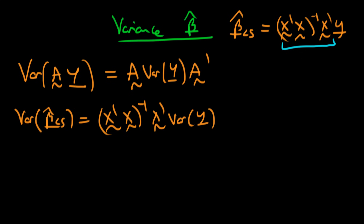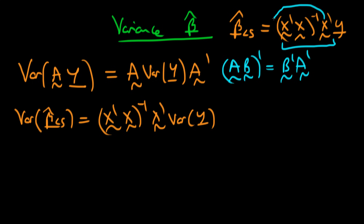Now I need to find A' (A transposed). To do that, we use the result that for two matrices A and B multiplied together, the transpose of that product is B transposed times A transposed — the order inverts. So when I take the transpose of this entire expression, X' comes out to the front, but taking the transpose of X transpose just gives back the original matrix X.